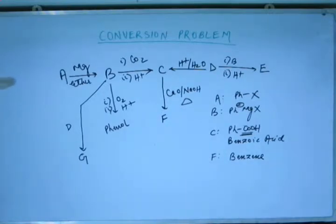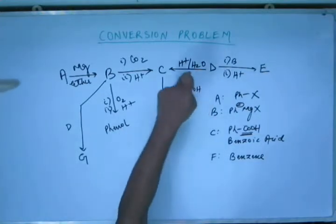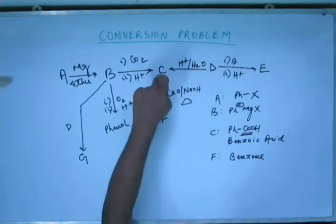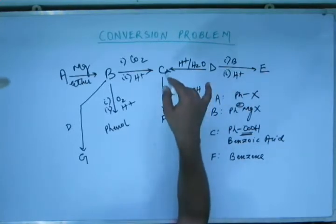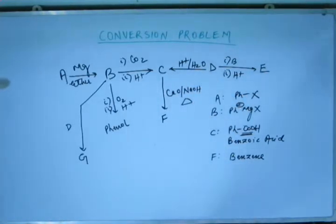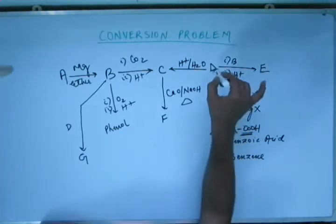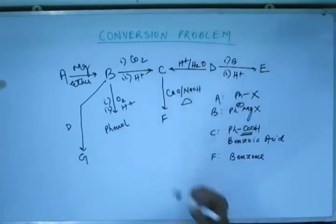Now that functional group as such can be any acid derivative. But to zero down to one particular functional group, I must tell you that when you hydrolyze D, you get C and apart from C you also get ammonia gas. So if I add this information in order to get D a unique compound, when you hydrolyze D and you get C, you also get ammonia gas along with this.